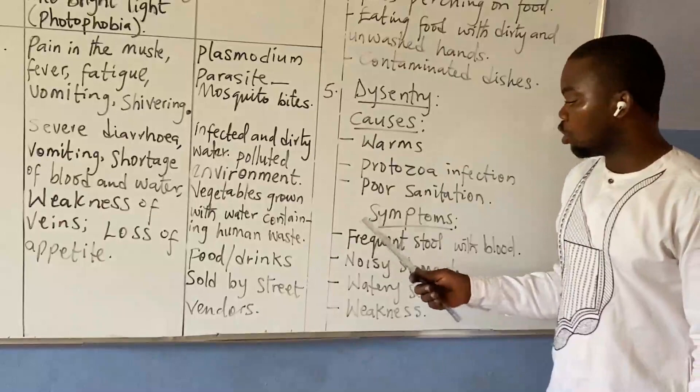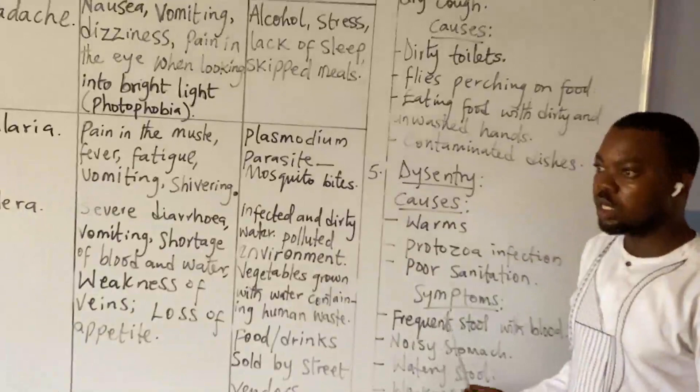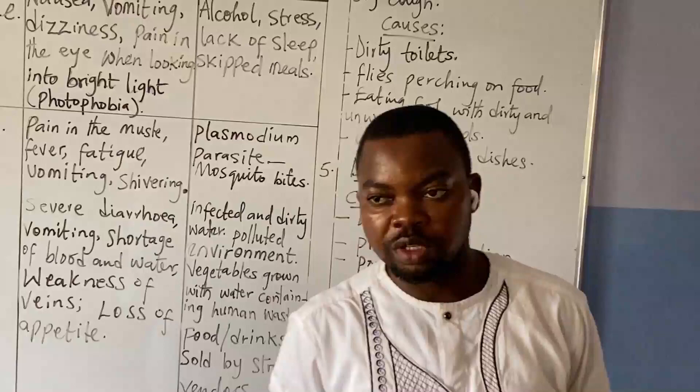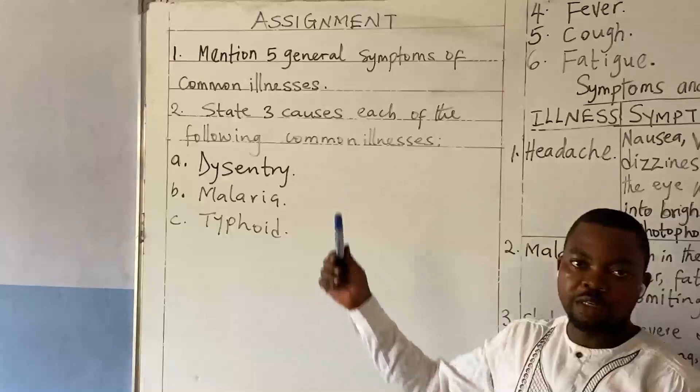That is another symptom of dysentery. We also have watery stool and weakness of the body. So all these common illnesses can kill if proper treatment is not given. We have to take proper medication — if you have any of them, you visit the doctor and you take proper medication.